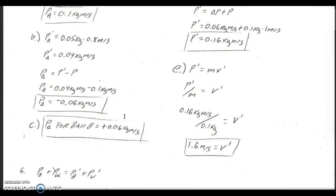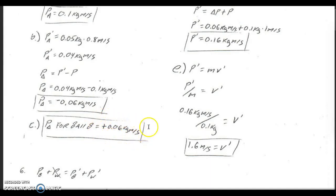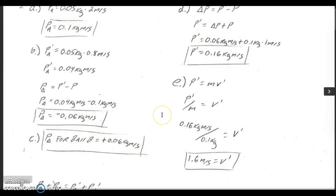For part C, what is ball B's change in momentum? If ball A lost 0.06 kilogram meters per second, that momentum had to go somewhere — it was given to ball B. So ball B had to gain 0.06 kilogram meters per second, because momentum is conserved.